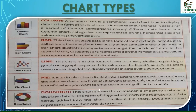Next is the donut chart. This chart shows the relationship of parts to a whole and displays in the form of a ring, where each ring represents a data series added to the chart. Unlike a pie chart, a donut chart can represent more than one data series.